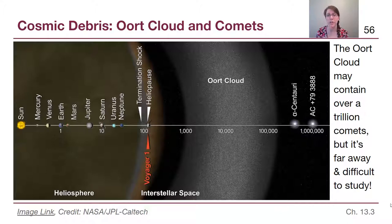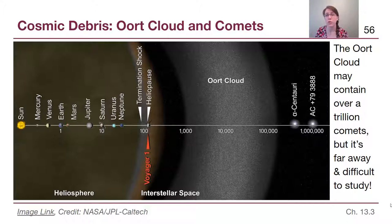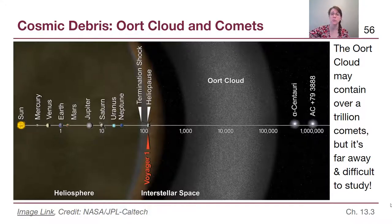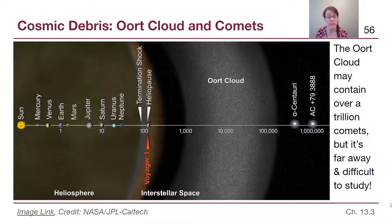Voyager 1 is a little over 100 astronomical units from the Sun, but the Oort Cloud doesn't start until about 1,000 or 10,000 AU. So we are nowhere close to being able to study objects in the Oort Cloud unless they come as comets into the inner solar system. But we do know what they're likely made of — it's just difficult to study things that are far away, small, and not very shiny.